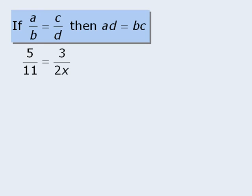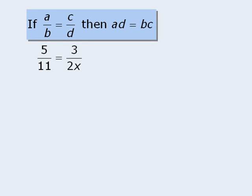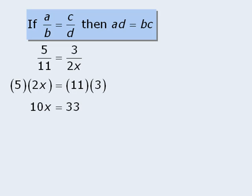We can use this rule to help us solve equations where we have one fraction equal to another fraction. When we apply this rule, we see that 5 times 2x must be equal to 11 times 3. At this point, we can simplify both sides, and then divide both sides by 10 to get x equals 3.3.